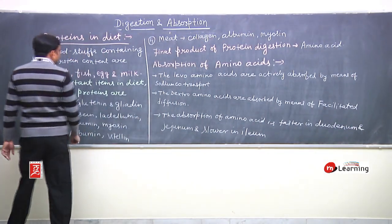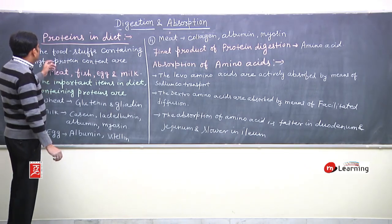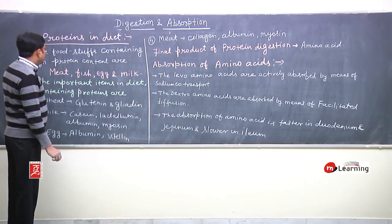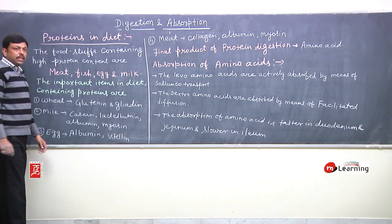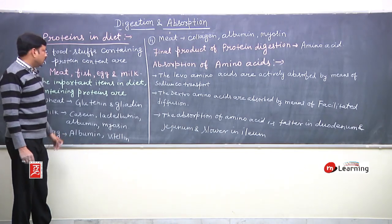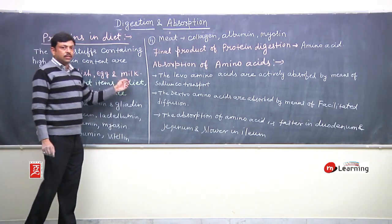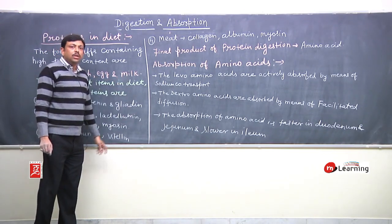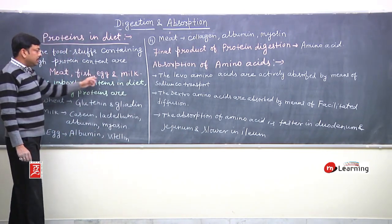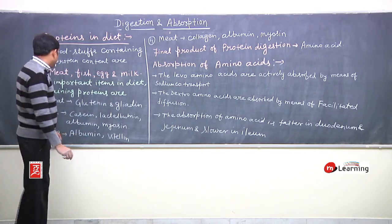Proteins in diet. The foodstuffs containing the highest protein content are meat, fish, egg, and milk — that is, animal products have the highest protein content.